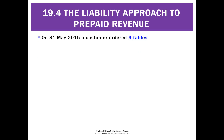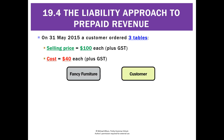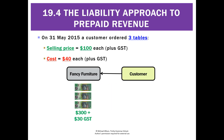For example, let's say on the 31st of May a customer has ordered three tables. Each table has a selling price of $100 plus GST, and the cost price of each table will be $40 plus GST. On the 31st of May, the customer is going to prepay for three tables, so they're going to give us $300 plus $30 GST.